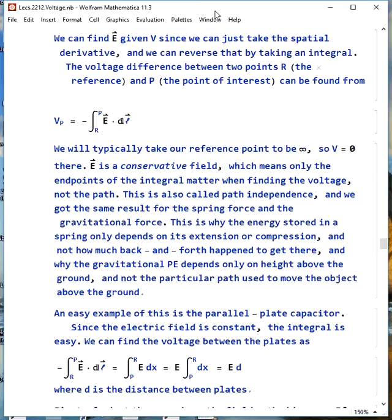We can find the electric field given the potential, since we just have to take the negative spatial derivative, and we can go backwards by taking the integral. We can find the voltage difference between two points, where R is our reference point and P is our point of interest, by doing the negative integral from R to P of E dot DL. Typically, we take our reference point to be infinity, so V equals zero there.